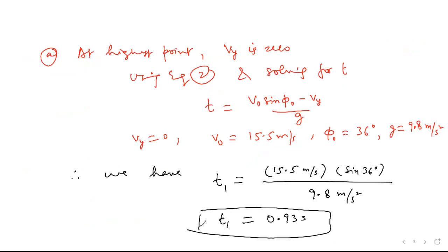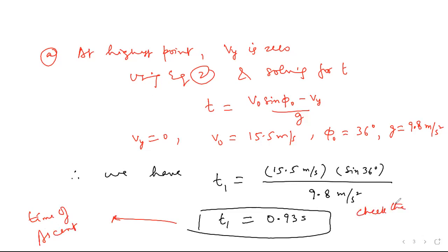So this is the time at which the ball reaches the highest point of its trajectory. This time is called the time of ascent. Check the calculation at home.